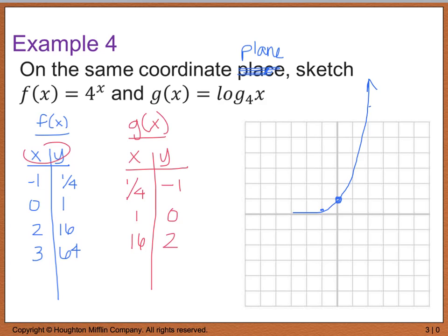So when x is 1 fourth, my y is a negative 1, so I'm going to come down here. When x is 1, y is 0. So when x is 16, which is way out here, my y value is going to be 2. So we're going to end up with something that looks like this.